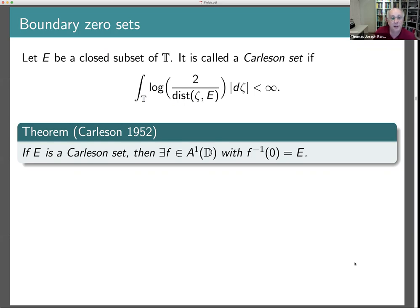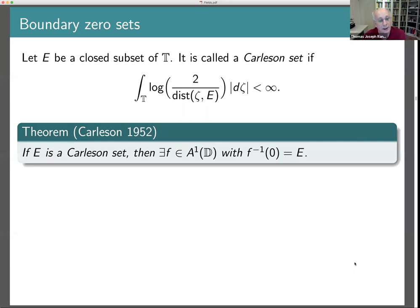But in the Dirichlet space it makes perfectly good sense, and it's a very interesting question. Before diving into the Dirichlet space, let me mention one or two other spaces where this question can be answered. The first example is the disk algebra — holomorphic functions on the disk that extend continuously to the closed unit disk. There, a boundary set is a zero set for a function in the disk algebra if and only if it has linear Lebesgue measure zero.